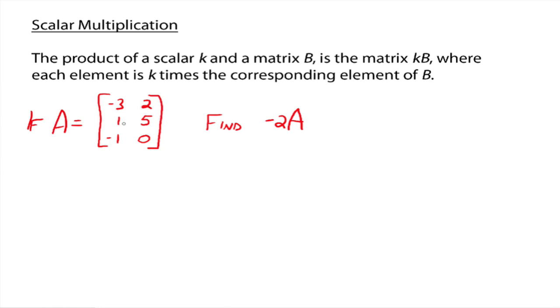So, for example, if A is negative 3, 2, 1, 5, negative 1, 0, this matrix right here, then to find negative 2A, we simply multiply every single entry inside A here by that scalar negative 2. And that gives us 6, negative 4, negative 2, negative 10, 2, and 0. That's it. Scalar multiplication. We just multiply every single entry inside the matrix by that scalar. That's how it's defined. Don't make it any harder than that.